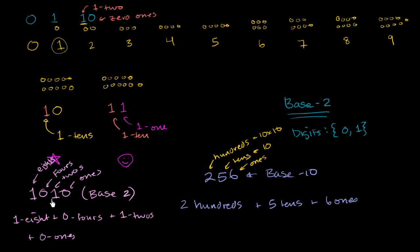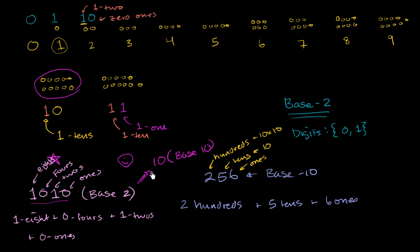So if you wanted to represent 2 objects in base 2, that's 1 two and 0 ones — written as 10. Three objects would be 1 two plus 1 one — written as 11. So 11 in base 2 represents 3 objects. When you go to 4, we've maxed out those places, so we have to go to the 4's place: 1 four, 0 twos, and 0 ones — written as 100. And 5 would be 1 four, 0 twos, and 1 one — written as 101.